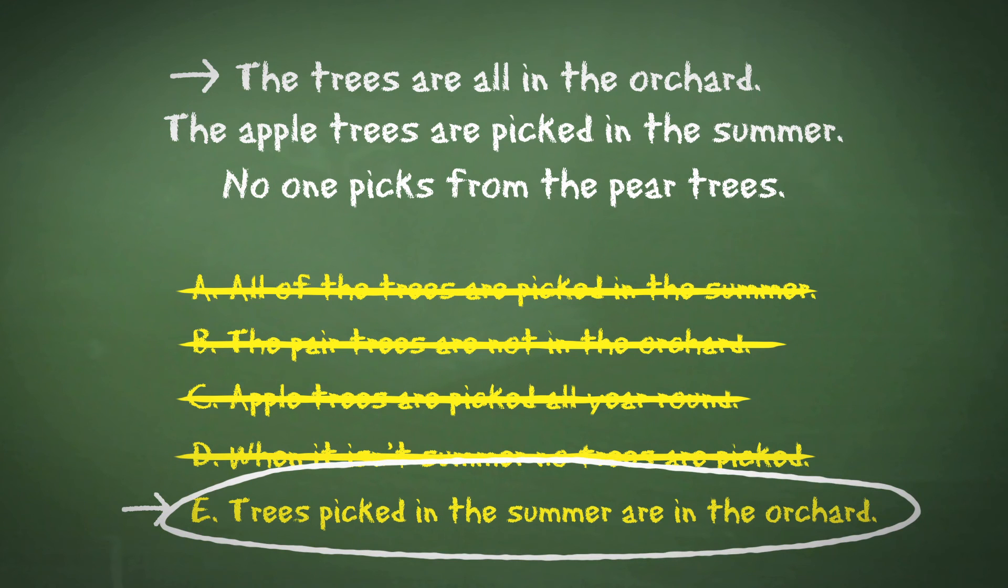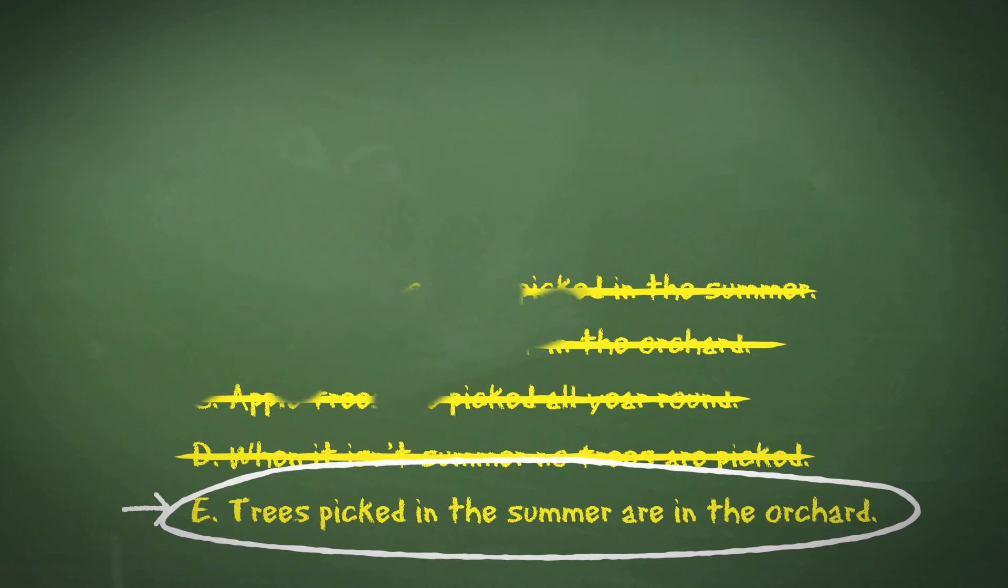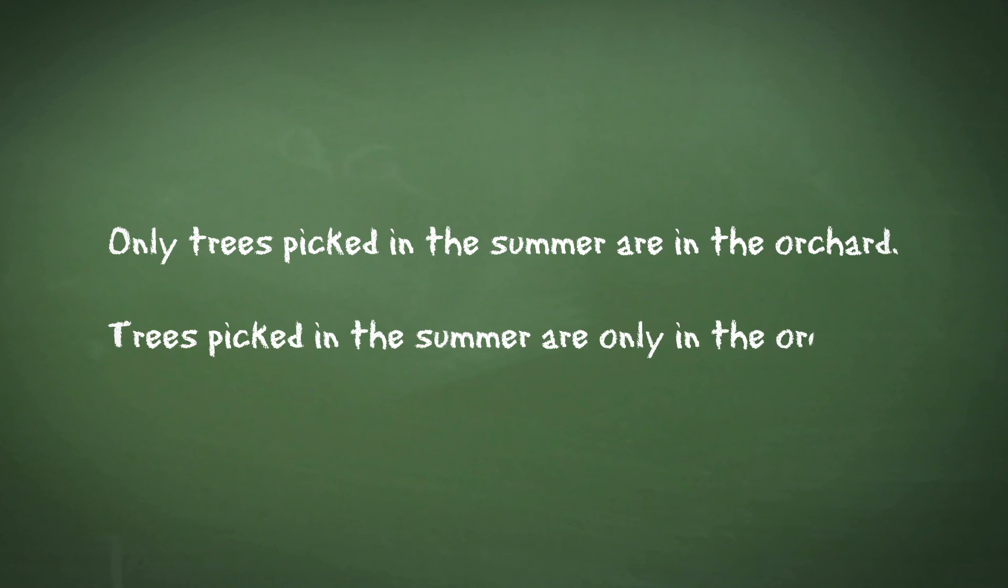One general point to look out for in this type of question is the word order and placement of key words. For example, if we have the statement 'only trees picked in the summer are in the orchard' and the statement 'trees picked in the summer are only in the orchard,' you can see that these mean different things. Examiners love these tricks, so be sure to read each statement very carefully.